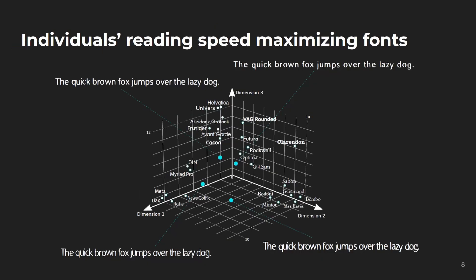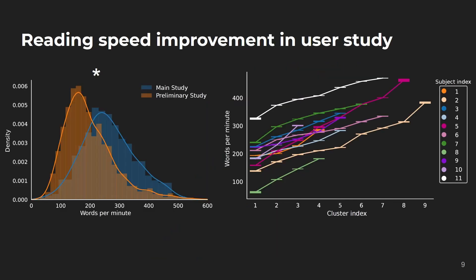We conducted a user study with 11 participants, who read 95 texts with individually generated adaptive fonts. Here are the fonts of highest reading speed for our participants. All fonts are concentrated in a region bound by the traditional fonts Rockwell, Myriad, Optima, and News Gothic. The pairwise distance between the optimized fonts in Euclidean space is comparable to the distance between Avantgarde and Univers.